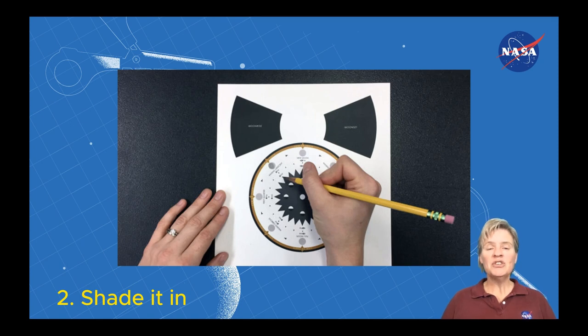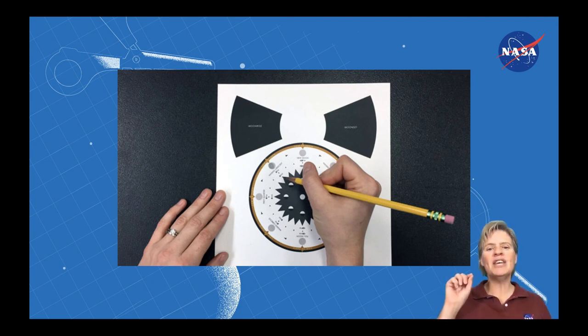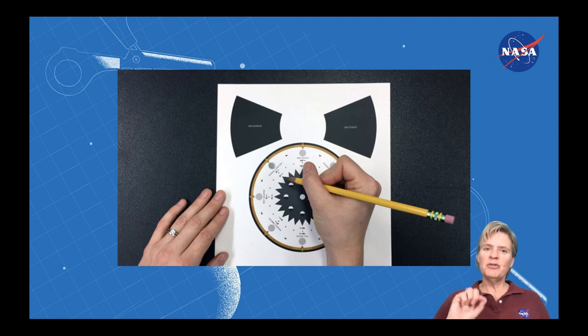The first thing you're going to do is use your knowledge of moon phases to color in the little moons on the moon phases wheel. There are the names of the moon phases, and you need to shade in the part that is dark so that you can see the moon phase as indicated.